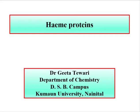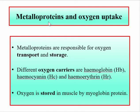In this lecture we will discuss heme proteins, specifically the structure and functioning of myoglobin. Metalloproteins are useful in oxygen uptake in biological systems. They are responsible for oxygen transport and storage, and the different oxygen carrier metalloproteins are hemoglobin, hemocyanin, and hemoerythrin.